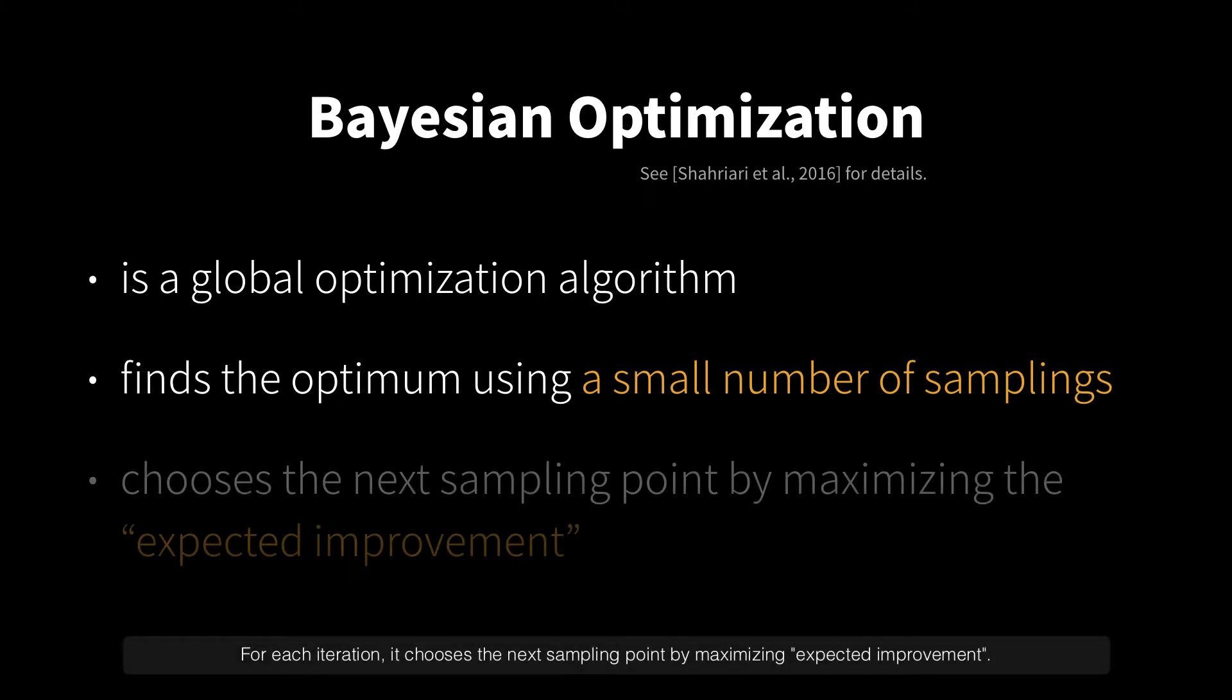For each iteration, it chooses the next sampling point by maximizing expected improvement.